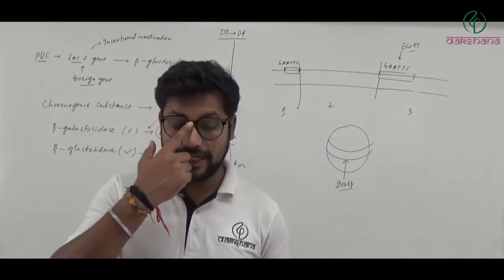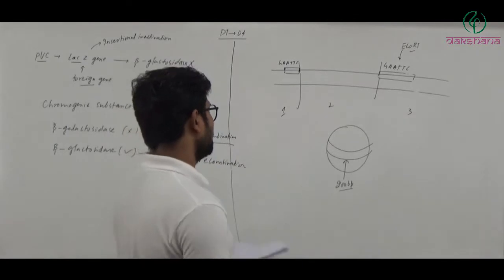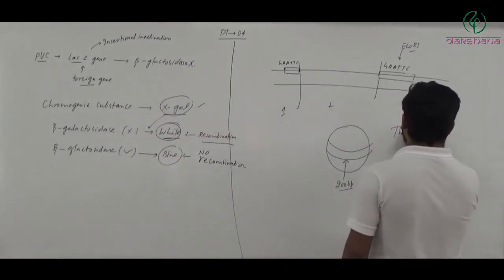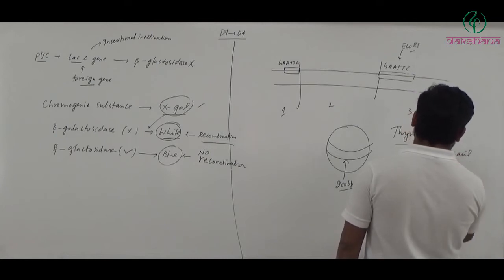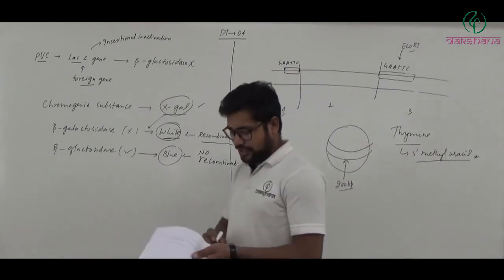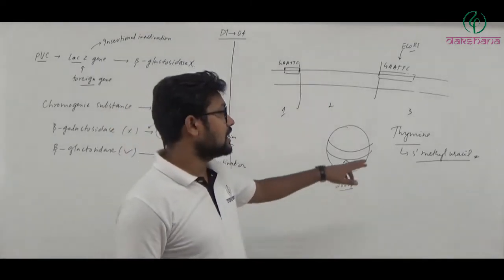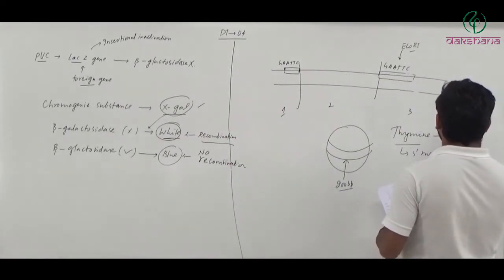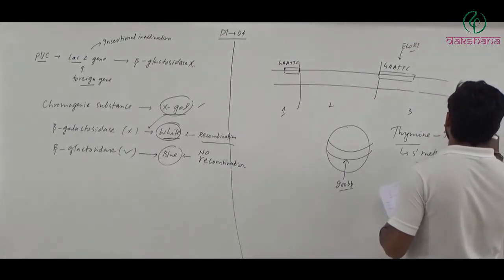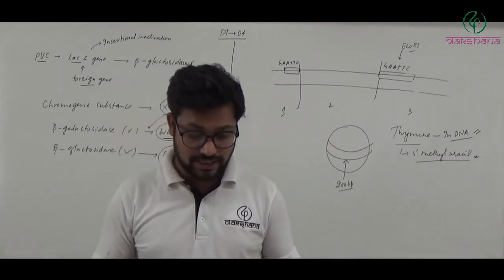Question number twenty-two: Methylated form of uracil. The methylated form of uracil is called thymine. Thymine's formula contains 5-methyl uracil. Thymine is only present in DNA, not in RNA. So the methylated form of uracil is thymine, present only in DNA. Question number twenty-two's second option is the right answer.